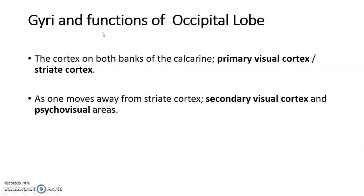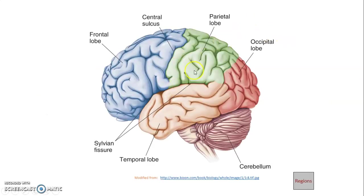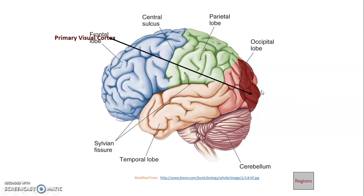The banks of the calcarine sulcus form the primary visual cortex, also called the striate cortex. As you move away from the striate cortex, the neighboring cortex forms the secondary visual cortex, which is the visual association area. The primary visual cortex is at the banks of the calcarine sulcus, while the neighboring cortex forms the visual association cortex.